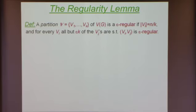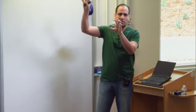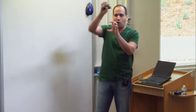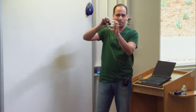The following condition holds: if you take any set V_i in the partition, then for almost all the other sets V_j — meaning all of them besides epsilon K of them — the pair V_i, V_j is epsilon-regular. So you take the partition into K clusters, and you want that if you pick any cluster V_i and look at all the other clusters V_1 up to V_K, then almost all of them form an epsilon-regular bipartite graph with V_i.